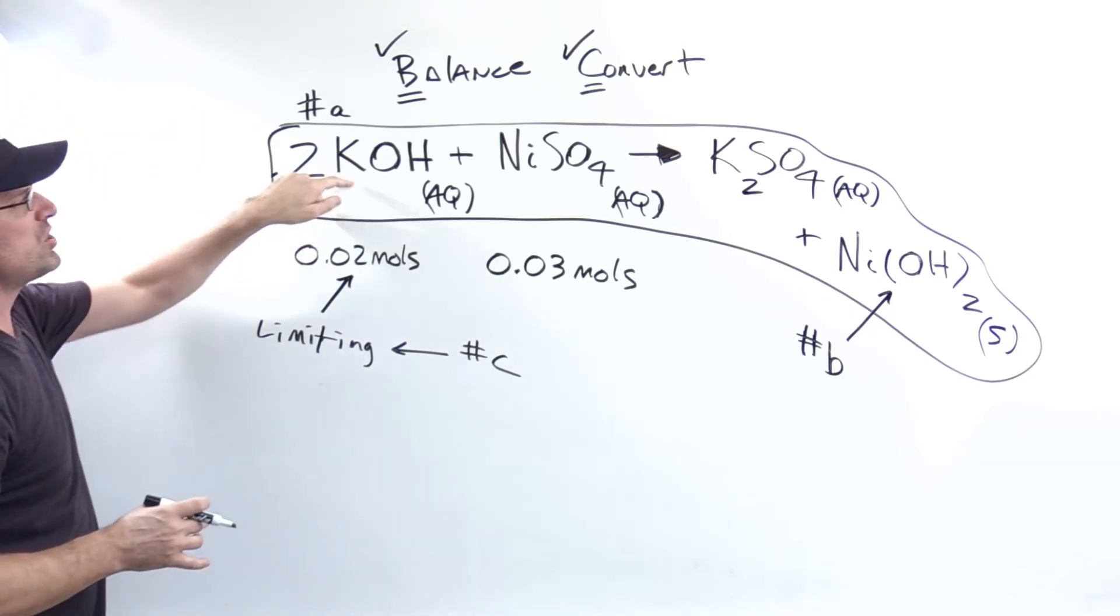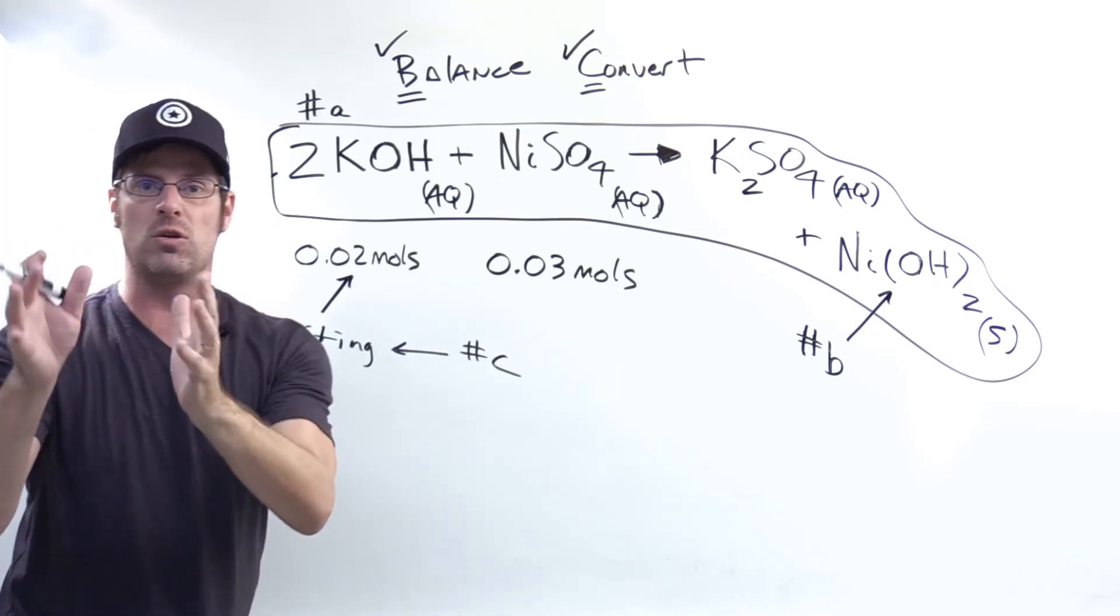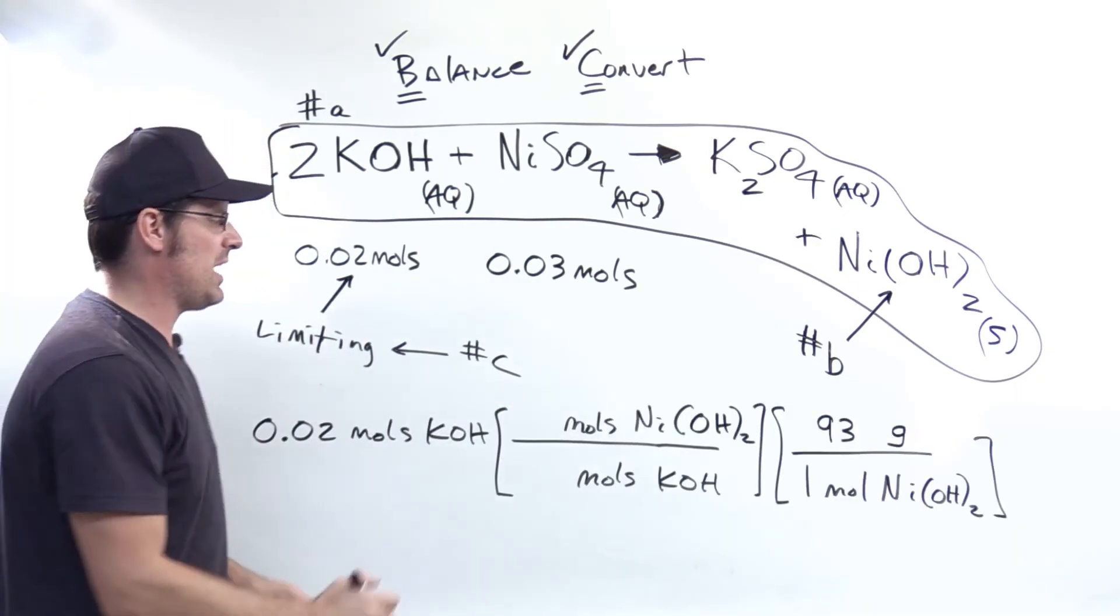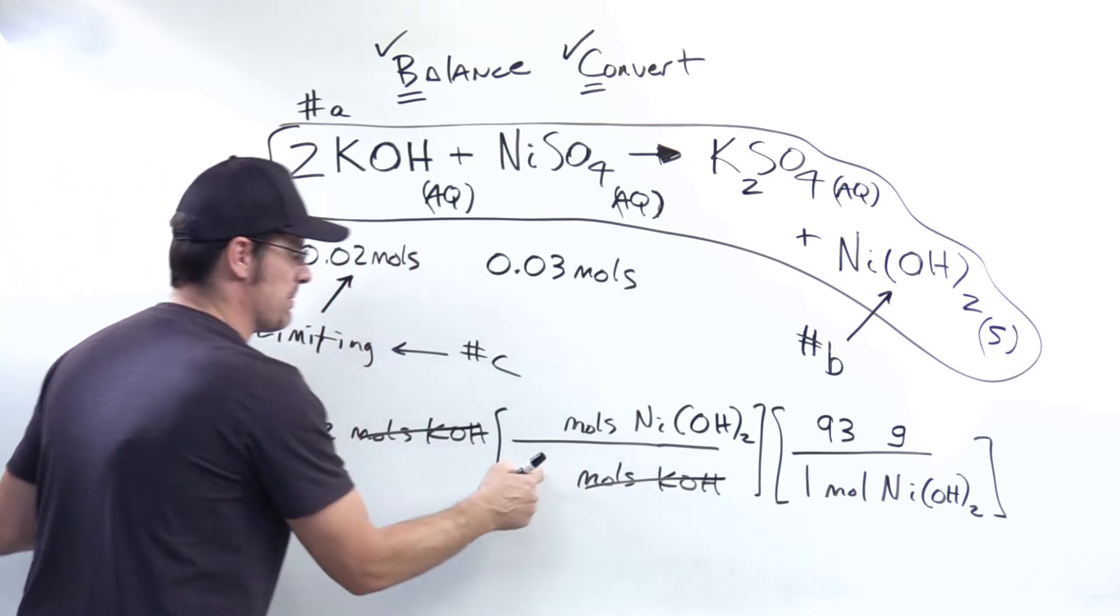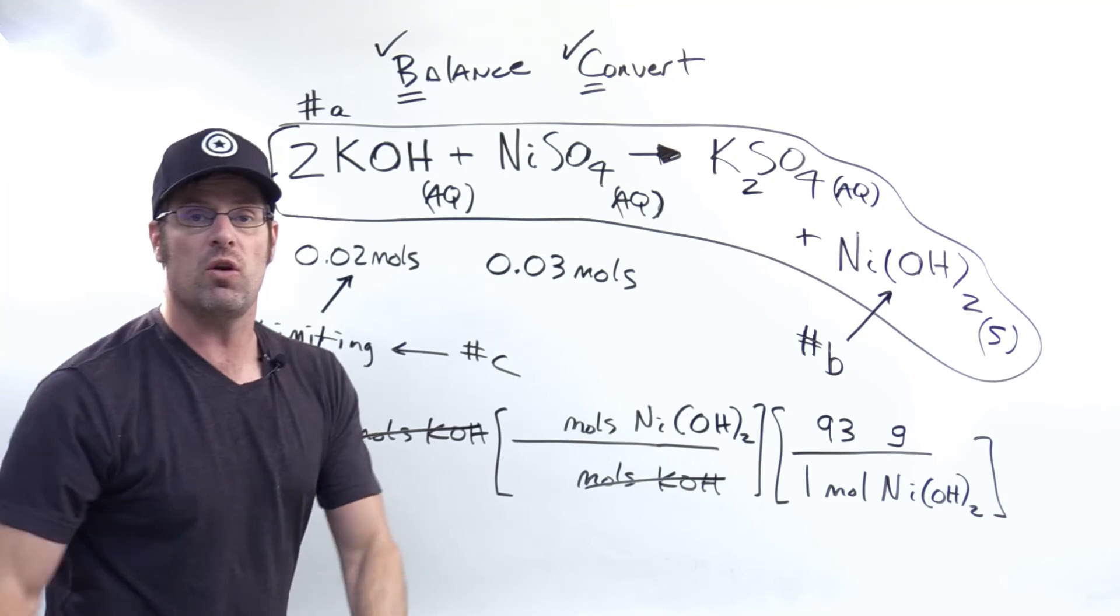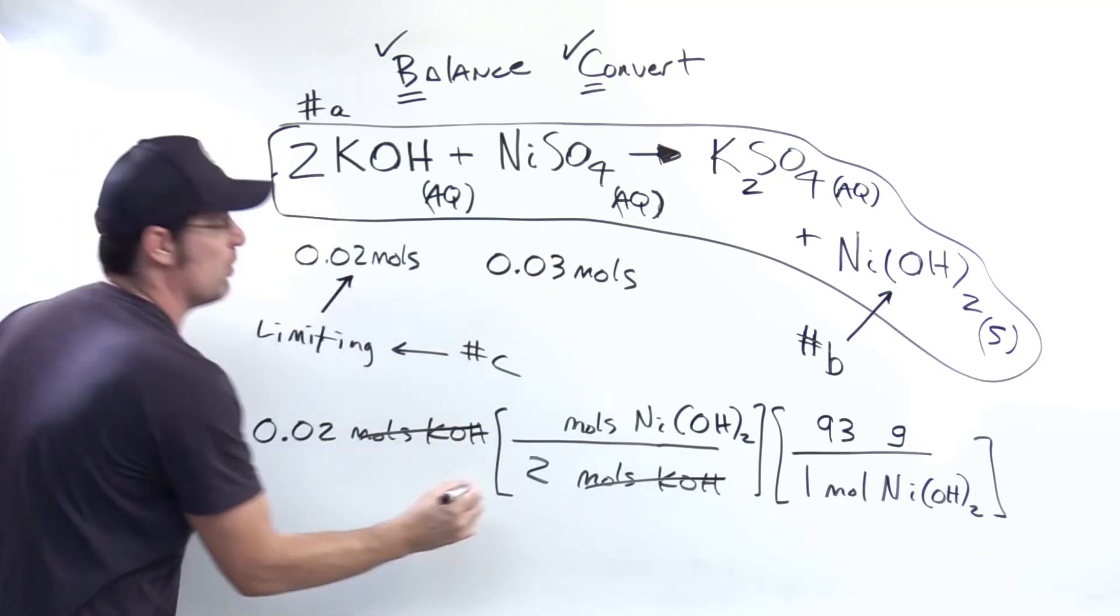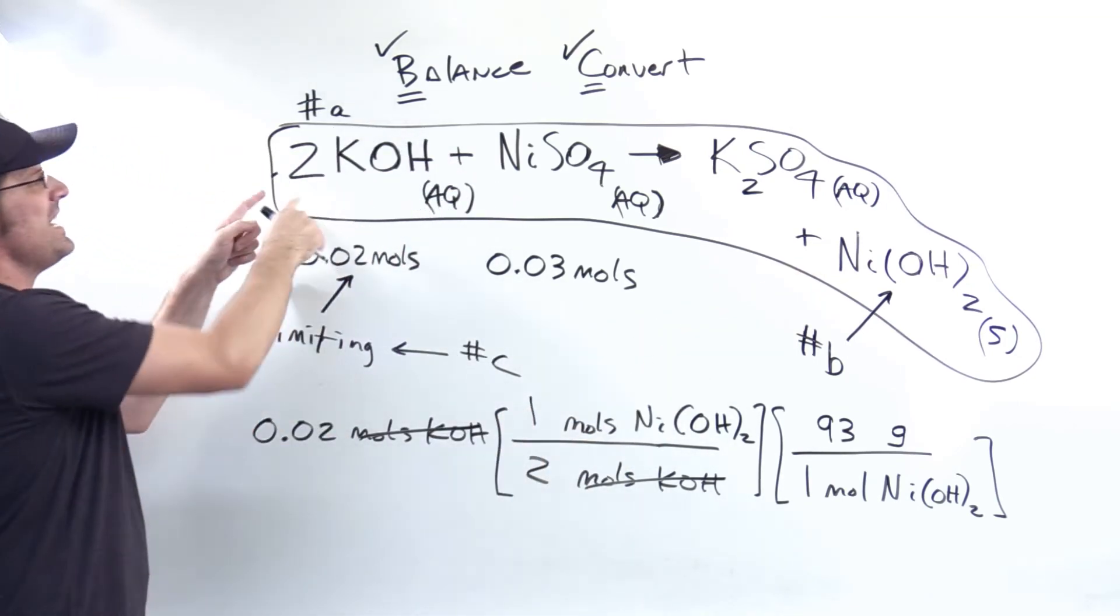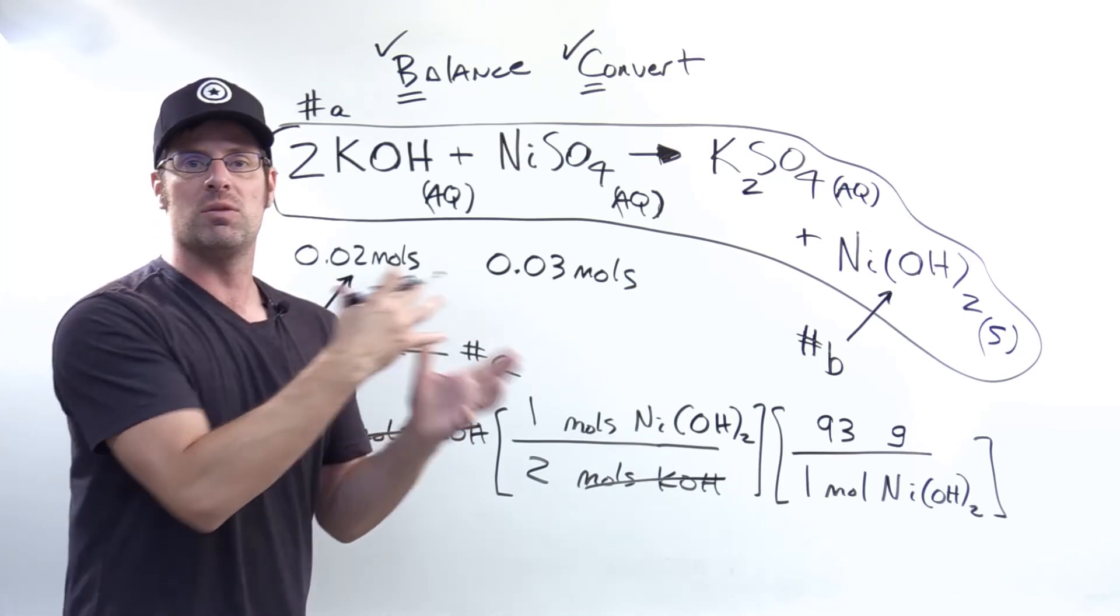So how do I jump from 0.02 moles of KOH in this equation to grams of nickel hydroxide right there? By using dimensional analysis. I've got dimensional analysis with moles KOH cancelling out moles KOH in the basement. But what numbers do I put here? Those are the coefficients in the balanced equation for each of these substances. Moles KOH has a two next to it. What's the coefficient next to the nickel hydroxide? Yeah, it's a one right there. Because each of these coefficients in a balanced equation really are mole to mole or molecule to molecule ratios.